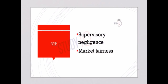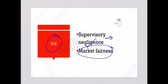NSE broke the rules because its supervisory role was not properly conducted. SEBI charged NSE for supervisory negligence — specifically, that some of its broker clients gained preferential access to certain market data. This violates SEBI's principle of not allowing information asymmetry among market participants, which directly affects market fairness.